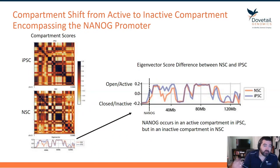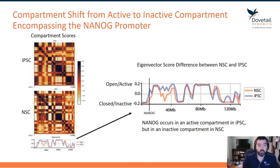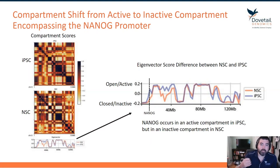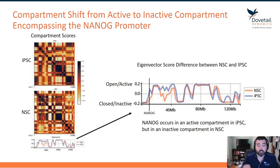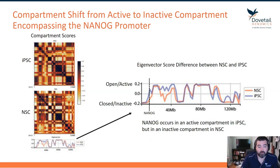What we can see is that in the NSC cell type, NANOG actually occurs now in silenced chromatin, whereas in iPSC cells it occurs in an open chromatin region. This shows that the compartment structure around NANOG already sets us up on the notion that NANOG activity — its transcription — is going to be severely reduced in NSC cells.